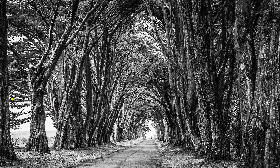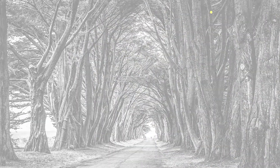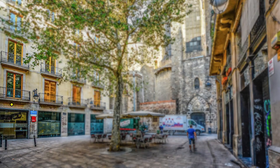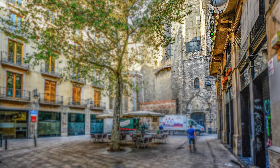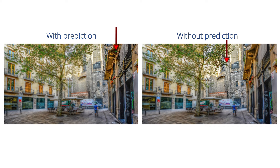Here we show our prediction in action for a few sample saccades, and present an application of our model to foveated rendering. Please note how quickly our prediction, indicated by the green dot, comes close to the next fixation location. Here we show a comparison of our prediction with the no-prediction case. Note the delay of rendering updates without prediction shown on the right, with respect to updates provided by our prediction shown on the left.